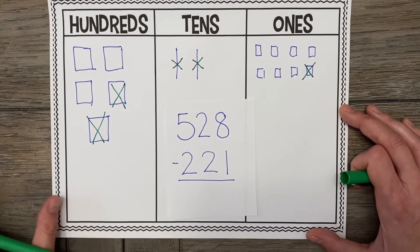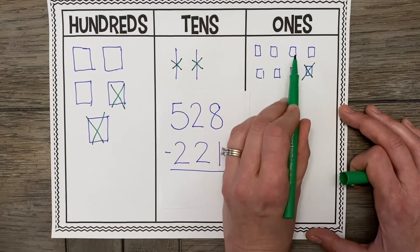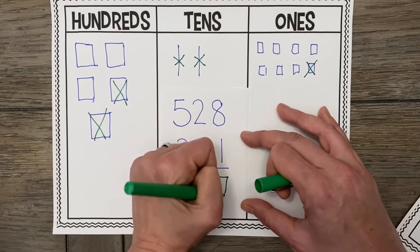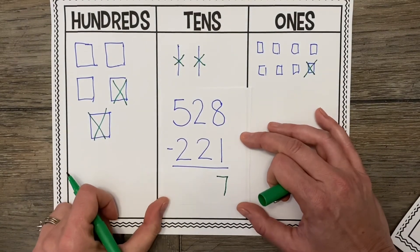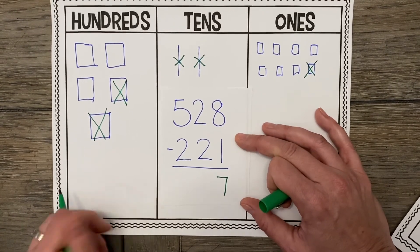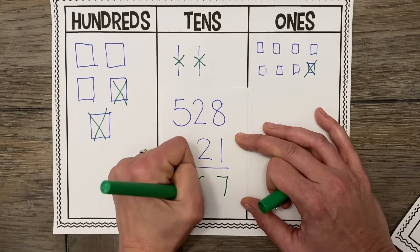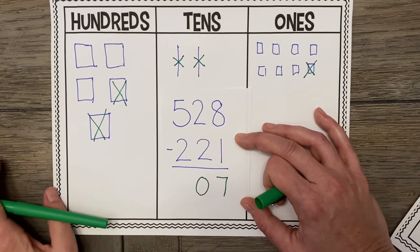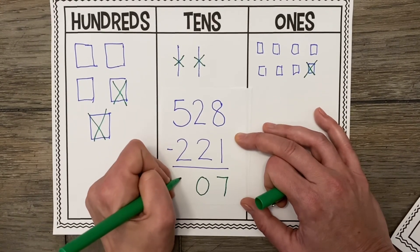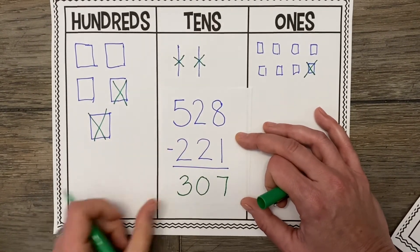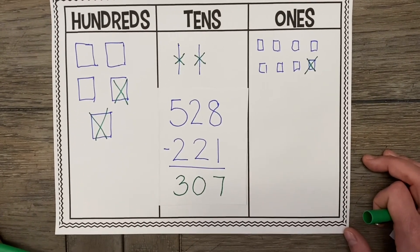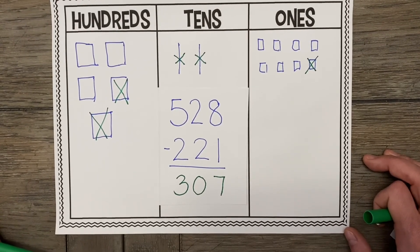So what do we do next? That's right. We count up how many 1s we have left. 1, 2, 3, 4, 5, 6, 7. Now what do we do? That's right. We count up how many 10s we have left. How many 10s do we have left? None. Zero. That's correct. And then finally, how many 100s do we have left? That's right. We have 3 hundreds left. So the answer to 528 minus 221 is 307.